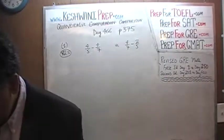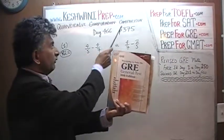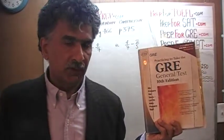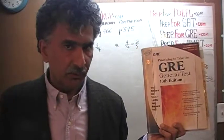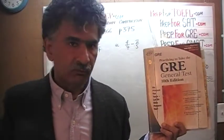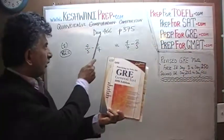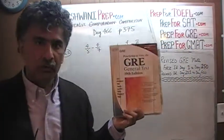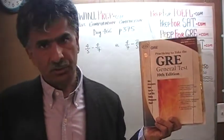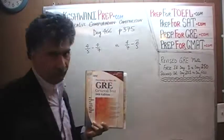Right now we are in the process of solving some quantitative comparison questions. Quantitative comparison questions, as you know, are a very important part of the exam — they are a big chunk of the exam and they have not gone away. Unfortunately, the newer books do not provide sufficient practice problems, so from day 401 we began solving quantitative comparison questions out of this book, the 10th edition of the General GRE. Right now we are on page 375 — please turn to it.